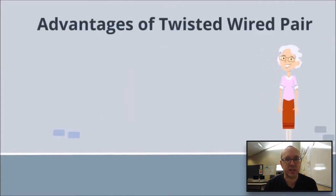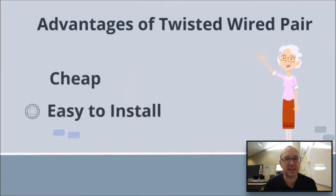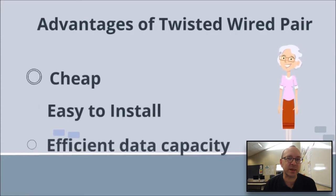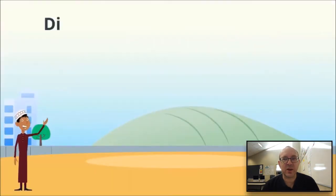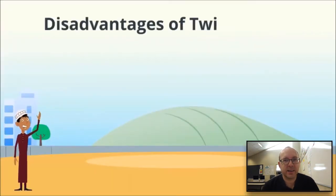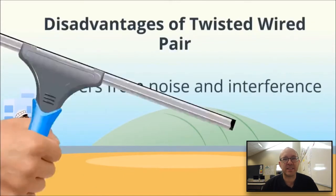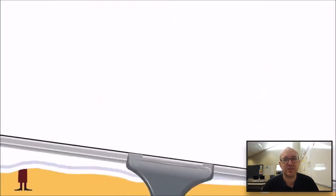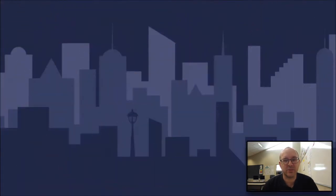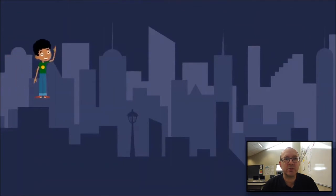The advantages of twisted pair cable: it's cheap, easy to install, and has efficient data capacity. The disadvantages: they suffer from noise and interference, and they have a distance issue — they can't go very far.